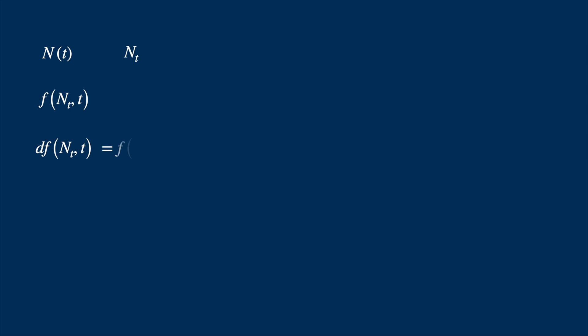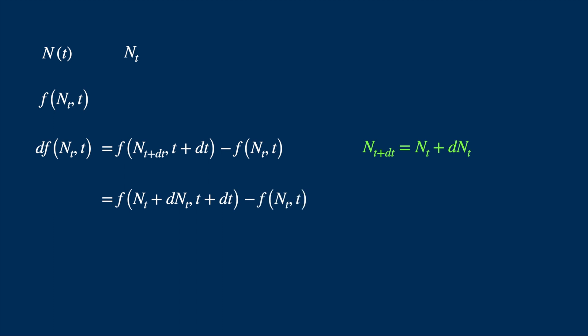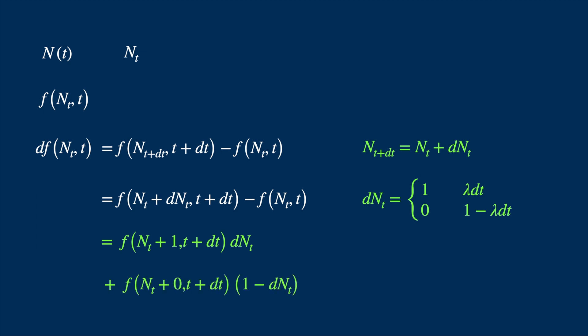Now let's move to a function of n and t. We are interested in the differential — again we write it as the change in the value of the function. Since f now depends on t as well, we have t plus dt in the second argument. We can again write n at t plus dt as the current value plus the change dn, and make this substitution. Since dn can again take the value one or zero, the first term can be written as the sum of two terms: one with dn and another with one minus dn. If a jump occurs, dn equals one and one minus dn is zero, giving us the function evaluated at n incremented by one.